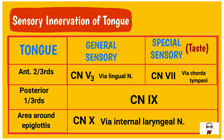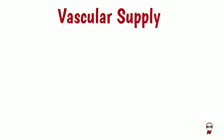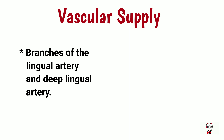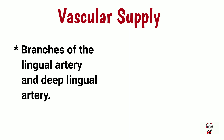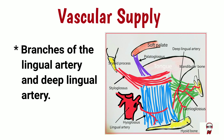In the posterior one-third, both general and special sensory are innervated by the glossopharyngeal nerve. The area around the epiglottis is supplied by the vagus nerve through the internal laryngeal nerve. The vascular supply of the tongue comes from branches of the lingual artery and the deep lingual artery.